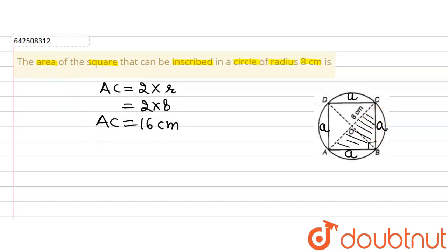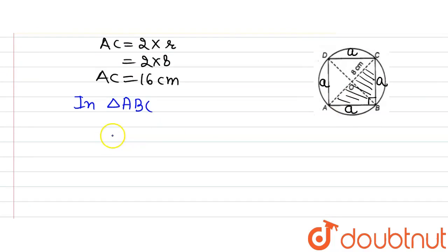In right triangle ABC, we will have hypotenuse, that is AC square, equal to sum of base square and perpendicular square. Base square, that is AB square, plus perpendicular square, that is BC square. This is what we are getting using Pythagoras theorem.